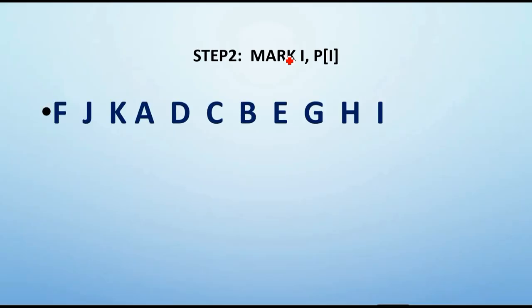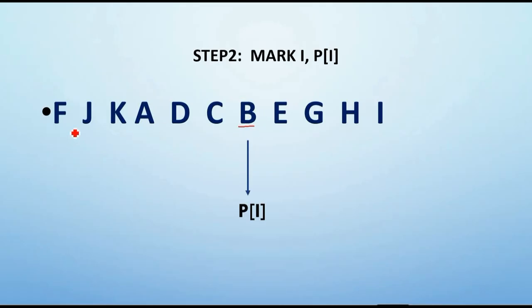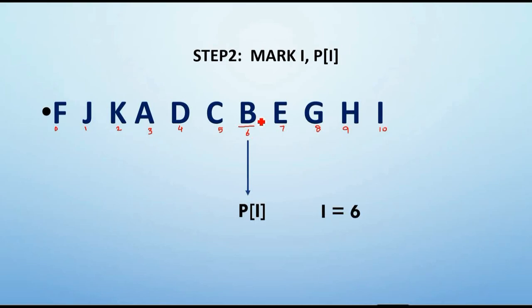Step 2: we mark i and P(i). From the previous step, we know that when the condition failed, the last element was B. So in this step, P(i) will be B. And i is the index value of B. Writing down the index values — 0, 1, 2, 3, 4, 5, 6, 7, 8, 9, and 10 — B is at position 6. So i equals 6. With these two things in mind, let's move on to the next step.